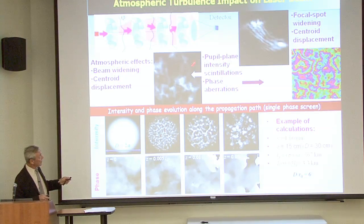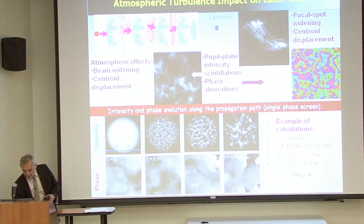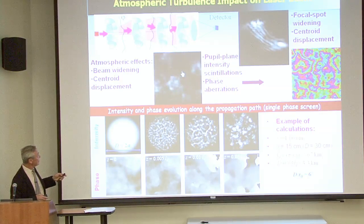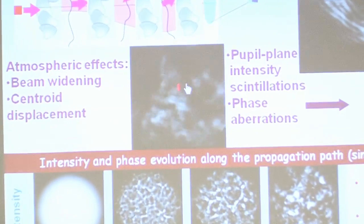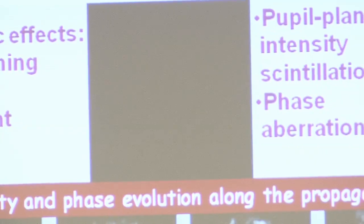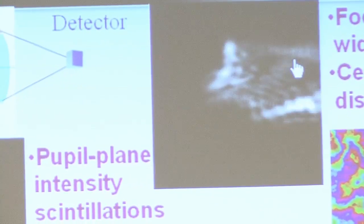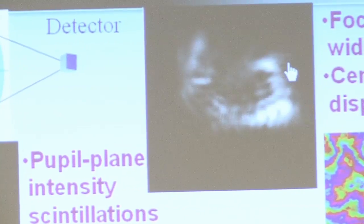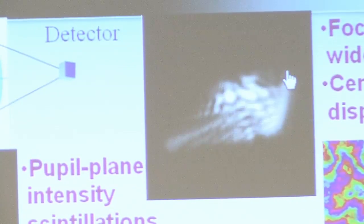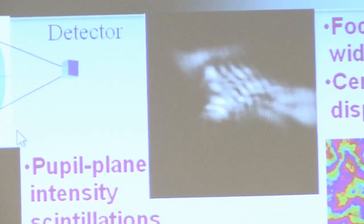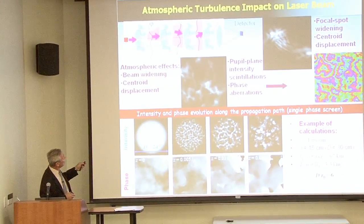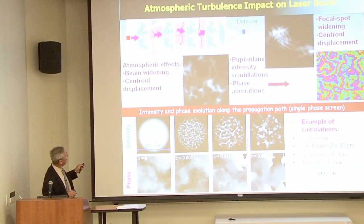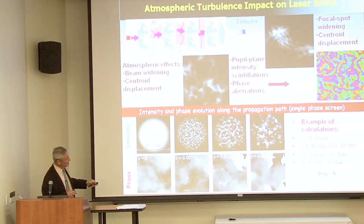When a laser beam propagates through atmosphere and heats random pockets of air with slightly different temperature, it causes a variation of intensity of light in front of the lens, and also creates a dancing of the focal spot. This is what we see in front of the lens — you can clearly see there is wind here because all the inhomogeneity of intensity is moving. In the focal plane we see dancing and distortion of the focal spot. The result is what we call scintillation — a non-uniform intensity.